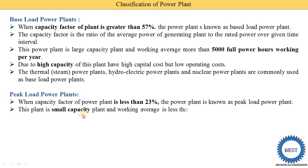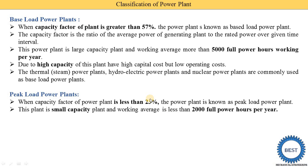The peak load power plant is a small capacity plant. Its working average is less than 2000 full power hours per year. In one year there are 8760 hours, and multiplying by 0.23 gives approximately 2000 hours. So a plant running less than 2000 hours per year is called a peak load power plant.